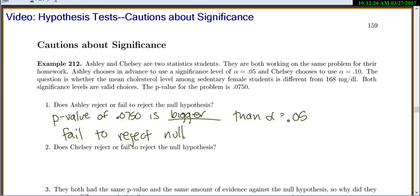Okay, number two. Does Chelsea reject or fail to reject the null hypothesis? So Chelsea had a p-value of 0.0750 because they both have the same data. But Chelsea used alpha equals 0.10. So then her p-value is smaller than alpha. And so because it's small, we will reject the null hypothesis.